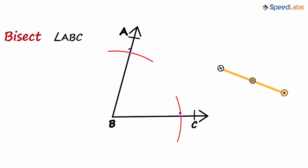We keep the compass on any one of these intersections. Let's say we keep it here. With the compass here, we have to make an arc anywhere in the interior of the angle. Anywhere in this region. Let's make an arc here.